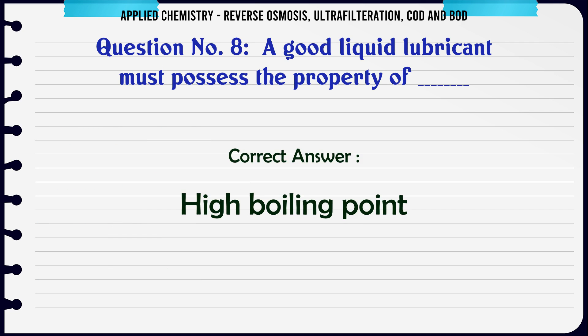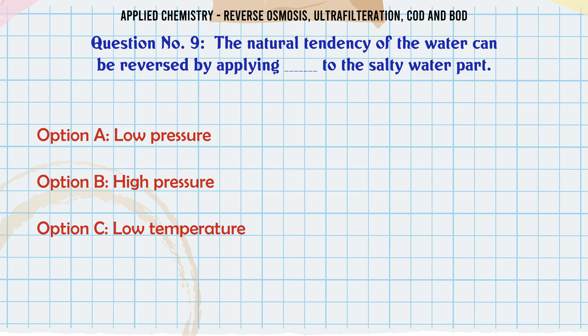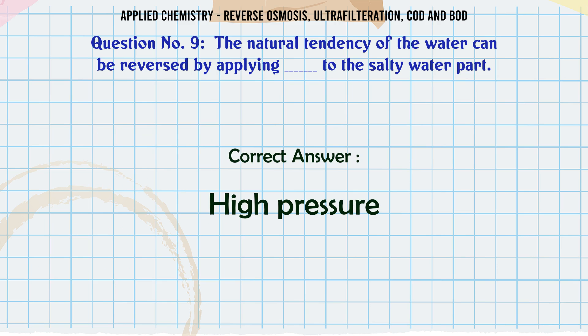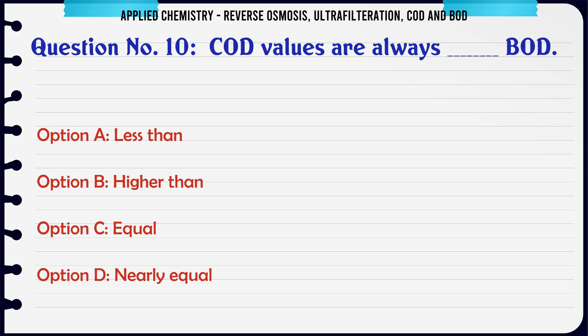The correct answer is high boiling point. The natural tendency of water can be reversed by applying to the salty water: a) low pressure, b) high pressure, c) low temperature, d) high temperature. The correct answer is high pressure.